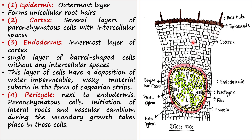Next to the epidermis we find this wide layer called the cortex. The cortex contains several layers of cells — these are parenchyma cells. Many parenchyma cells are present here, and they have little intercellular spaces between them.